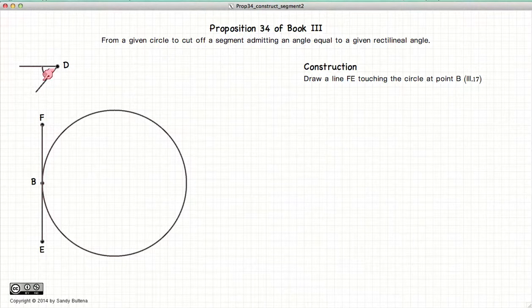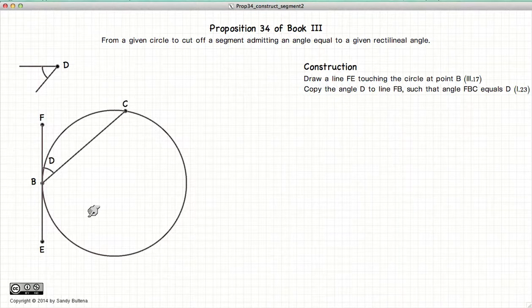Next, we take the angle D and copy it to the line segment FB using the methods described in Proposition 23 of Book 1. Extend this angle so that when the line touches the circle, it is at point C.